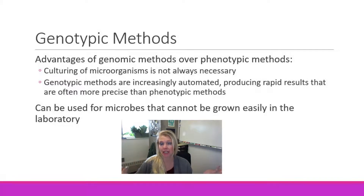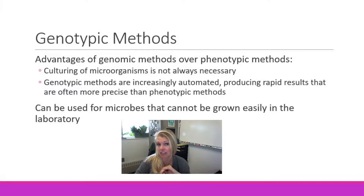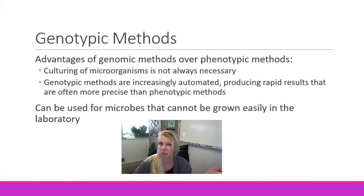Even when an organism could be grown in the lab, molecular work can identify it within a couple hours versus 24-48 hours for culture growth, cutting off a lot of time. Genotypic typing is also great for specificity — you can know exactly what virus, what strain of virus, or what strain of bacteria is present, right down to the species level. Some disadvantages include higher cost and not every lab being equipped to do molecular work, though it is becoming increasingly available even in smaller labs.